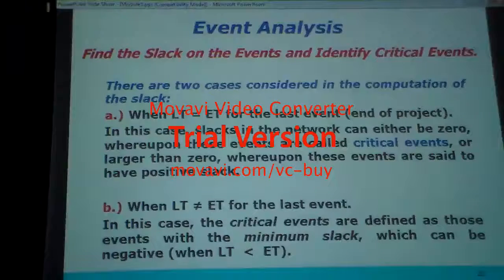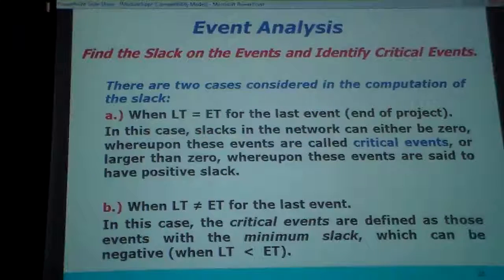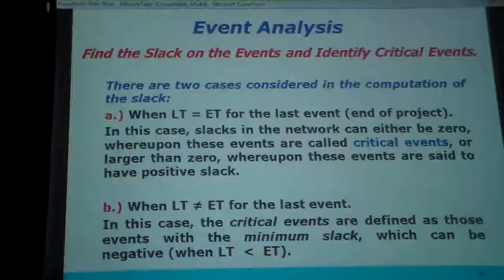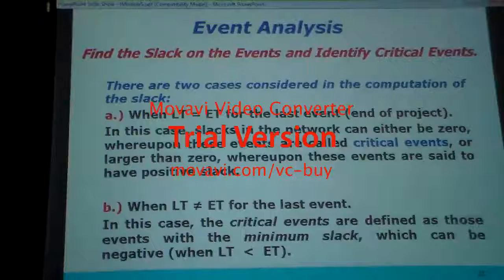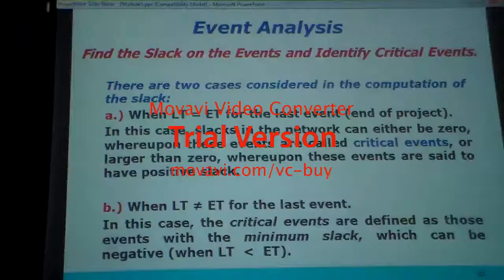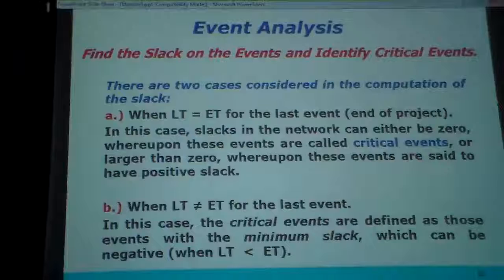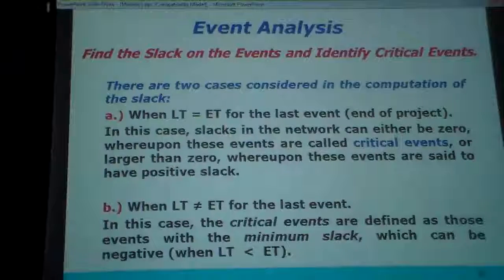If we are in a critical event, if we have any delay in that critical event — any week or any point of time — it will change the total time of the project. Slack equals late time minus early time. There are two cases considered in the computation of the slack. When late time equals early time for the last event, sometimes in a critical event we have to put two squares. But when we go to the end — the critical path — this one should be equal to this one. There is no difference. In the previous slide, always this is late time and this is early time. But in the critical path, they are equal — slack is zero.